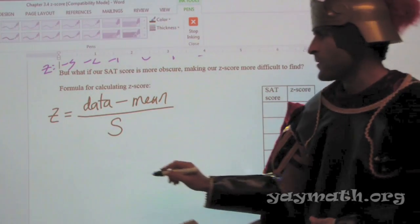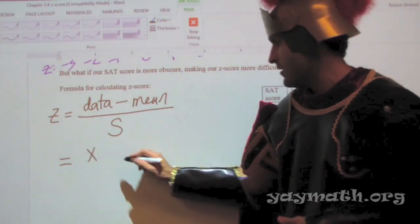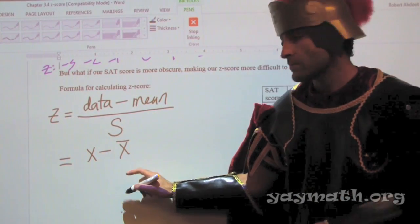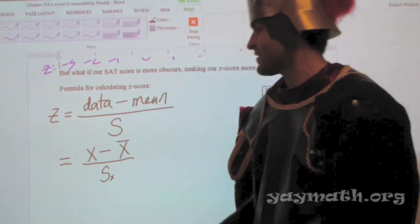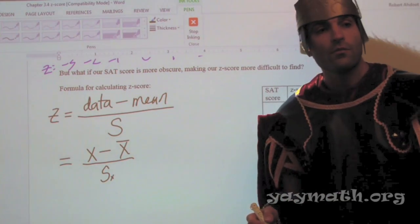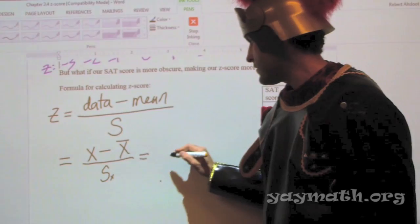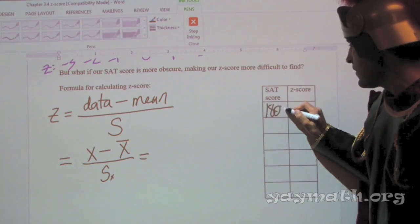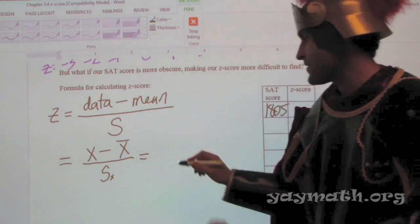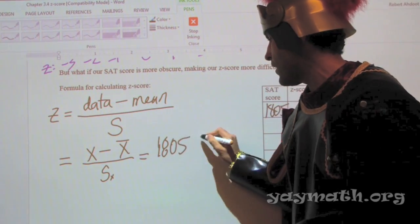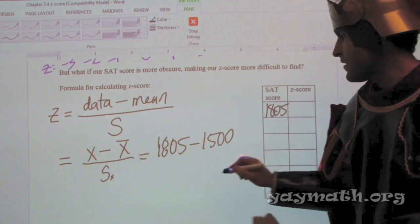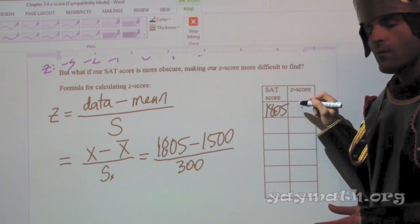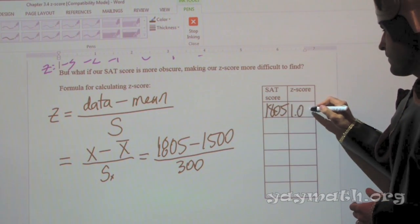So what if our SAT score is more obscure, making our z-score more difficult to find? Does anyone have maybe a suggestion for how to calculate z-score? For let's say 1805, for example. So we agree it's between what and what z-score? One and two. Do we agree that 1805 is also closer to one? Is there a way to calculate this with accuracy? There's probably a formula. There is a formula. What you can do is you can put the number away from the z-score to the left, put it over the standard deviation. Very good. That's right. In fact, it's the number away from the mean. So it's how far is 1805 from 1500? 305. Yes. So here is the formula for z-score. That was very impressive. Z-score equals data, whatever the value is, minus mean over standard deviation.